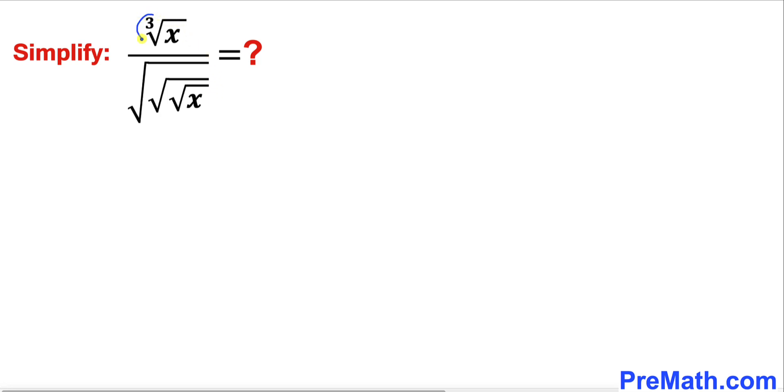Let's focus on the numerator part. Let's recall this basic rule where the nth root of a can be written as a to the power of 1 divided by n.